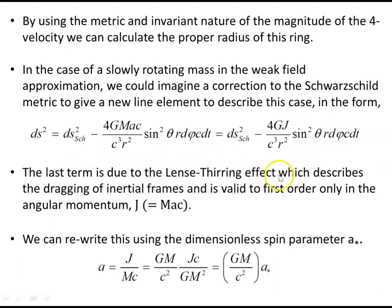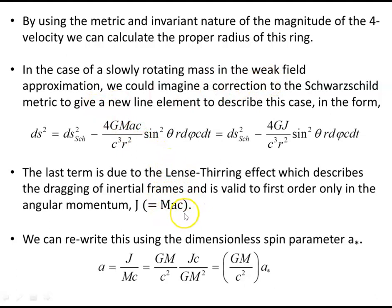The last term is due to the Lense–Thirring effect, which describes the drag of inertial frames and is valid to first order only in the angular momentum J. J was set to first order to equal the mass times the angular momentum per unit mass times c. So a is our coordinate — it came from our oblate spheroid coordinates. The angular momentum has been approximated to first order with this value, and this describes the slowly rotating mass in the weak field approximation. But a is our coordinate value from the previous slide.